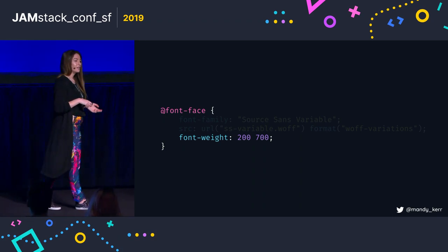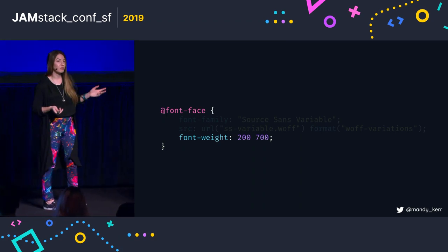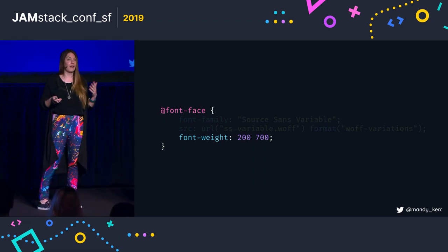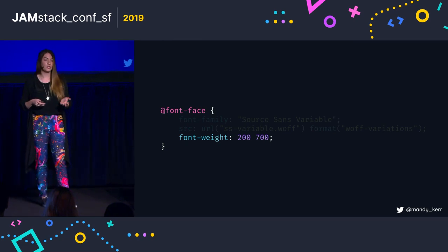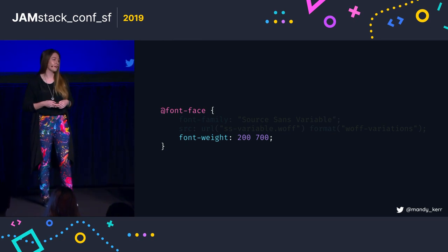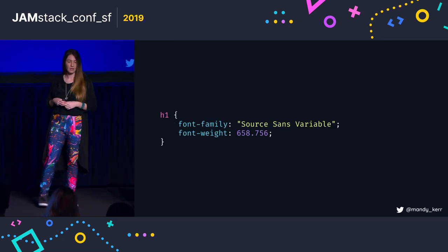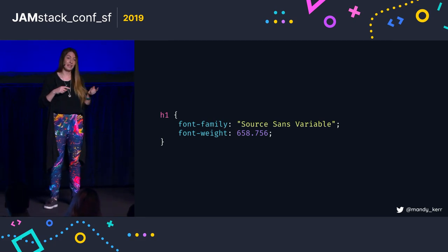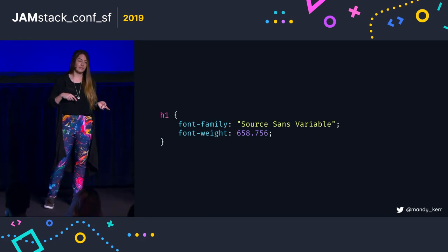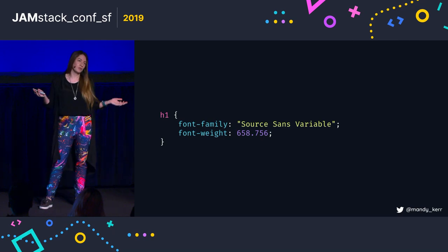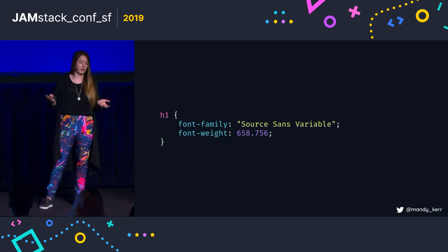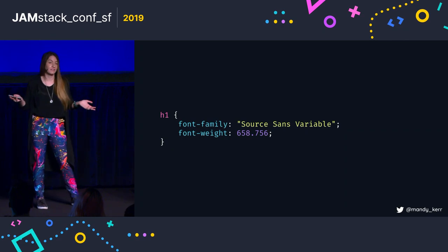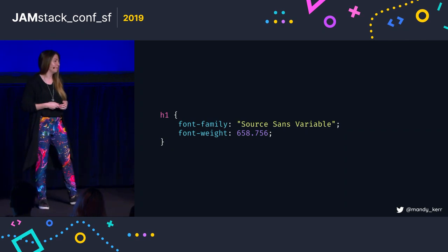But with a variable font, you don't need to do that — you can just specify a range. So in this case it's 200 to 700. When you reference the font in your CSS, you can just pick any number between 200 and 700 — so 658.756, whatever you want to do.